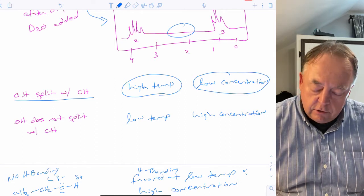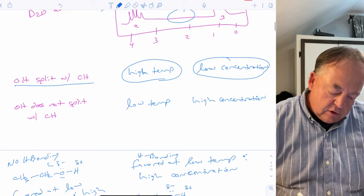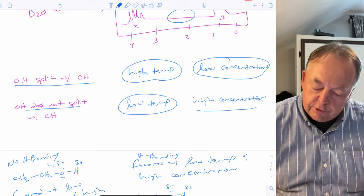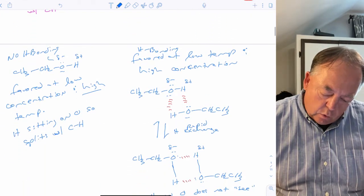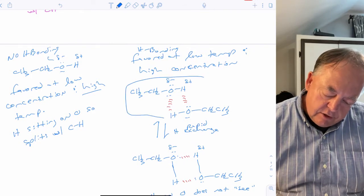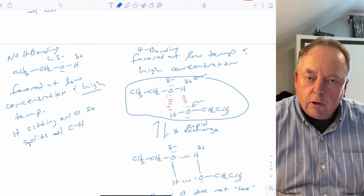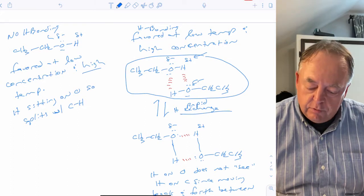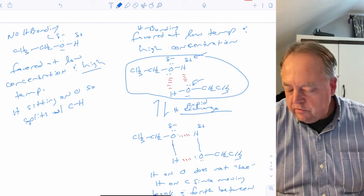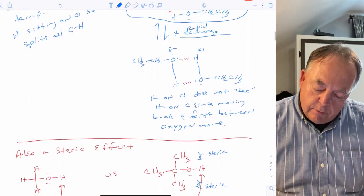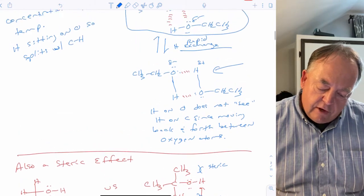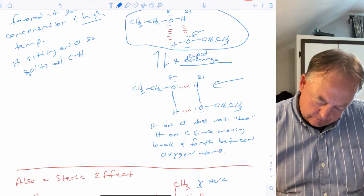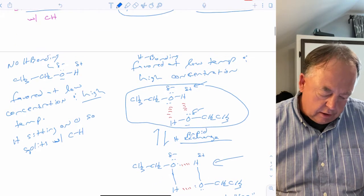Conversely, OH does not split with CH at lower temperatures or higher concentrations. This is because alcohols are hydrogen bonded to each other. The partial positive hydrogen bonds to the partial negative oxygen, and there is rapid hydrogen exchange between oxygens. If the hydrogen is rapidly moving between two oxygens, the carbon doesn't see it and it doesn't split with it.